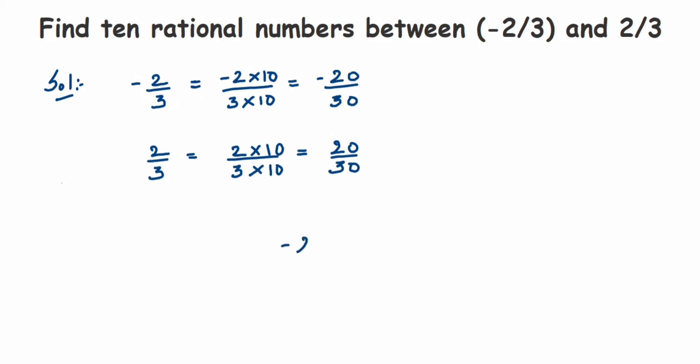Between minus 20 and 20 we have many numbers: minus 19, minus 18, and so on up to minus 1, then 0, then 1, 2, 3, and so on up to 19. We can pick any 10 and write them down.